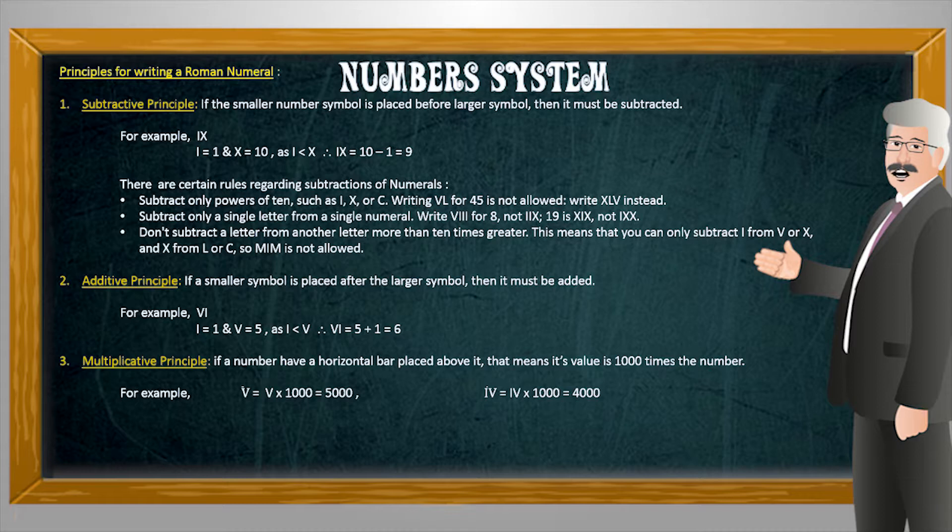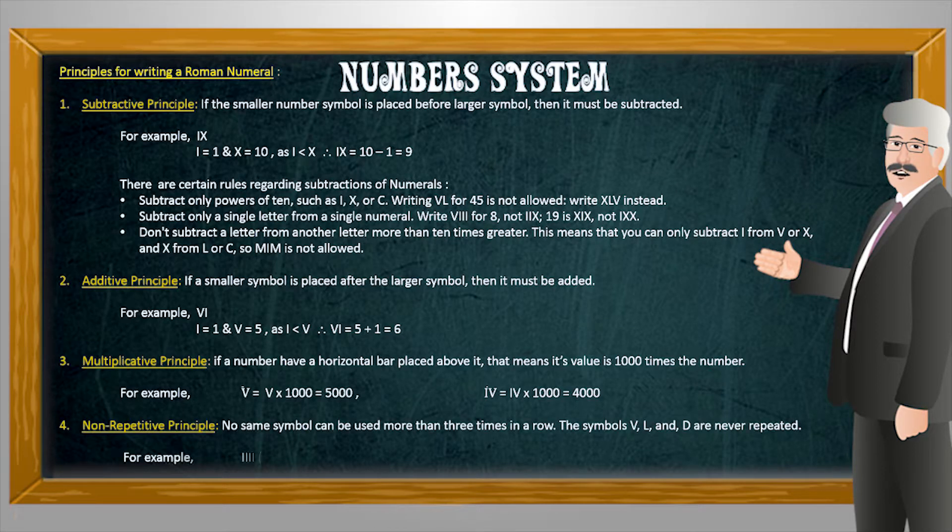The fourth and the last principle states that no same symbol can be used more than three times in a row and the symbols V, L, and D are never repeated.